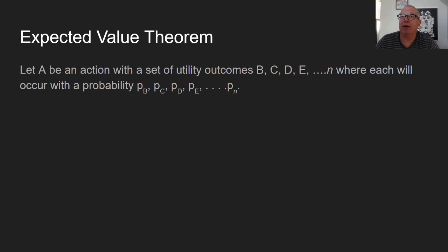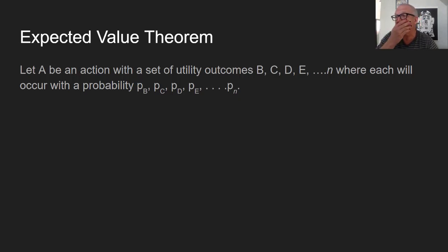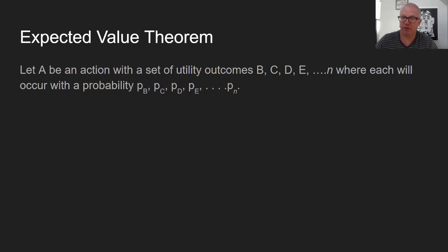Our expected value theorem that we learned about in the last lecture is this idea that: imagine we let A be an action with a set of utility outcomes. Suppose B, C, D, E through N could possibly result as an outcome of doing A, and we can attach a probability to each one of those.